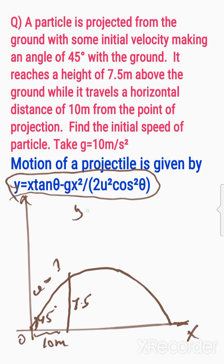What is the angle of projection? Y is the vertical distance and X is the horizontal distance. The height is 7.5 and X is 10 meters.